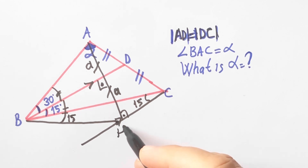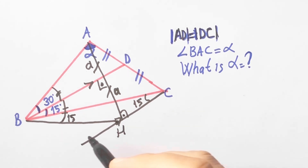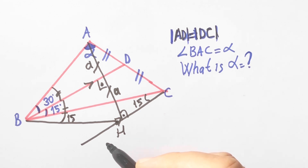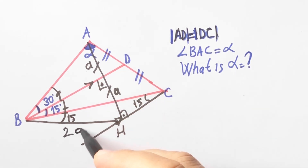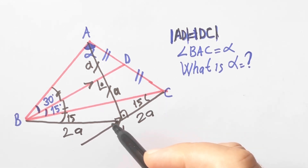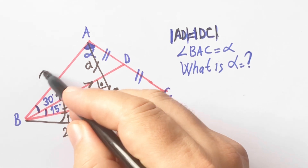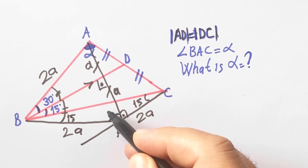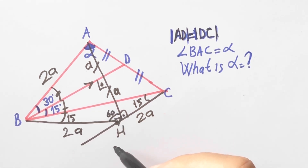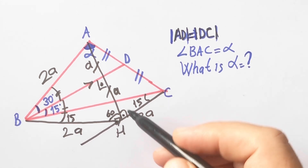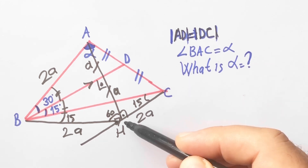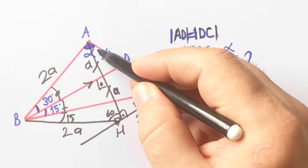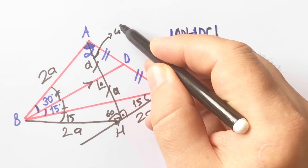Let's call this point H. BH and HC are equal, so AH and BH are 2A — here 2A as well, so here is 2A. We notice that the BH triangle is an equilateral triangle, and the AHC triangle will be an isosceles triangle.